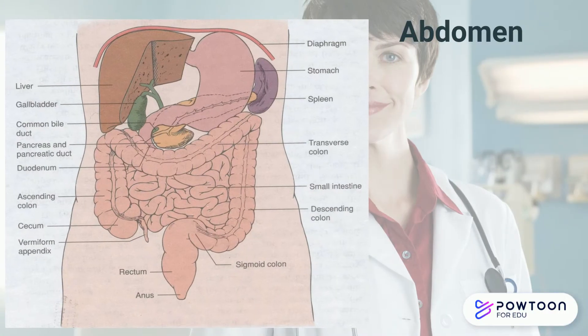Please review the structures and organs of the abdomen. Pay attention to the liver, the gastric bubble or the stomach, where the spleen is, as well as the loops of bowel.